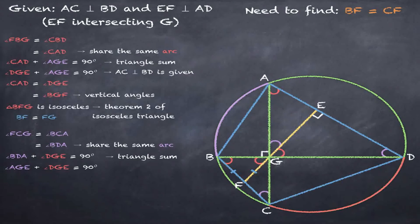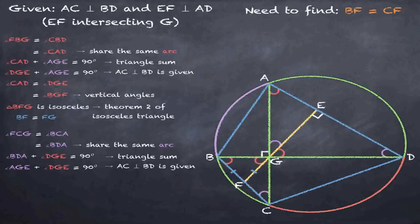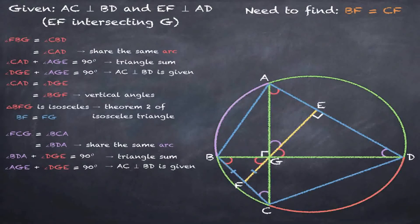Angle AGE plus angle DGE equals 90 degrees because line AC is perpendicular to line BD, which was given to us.